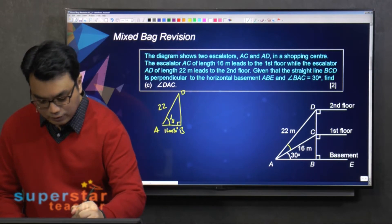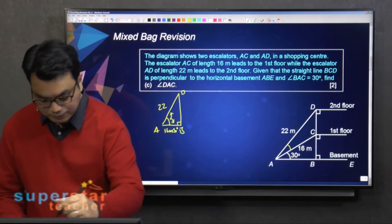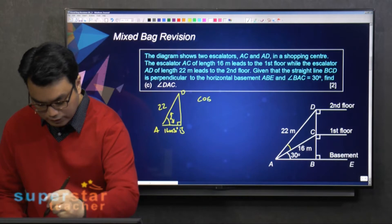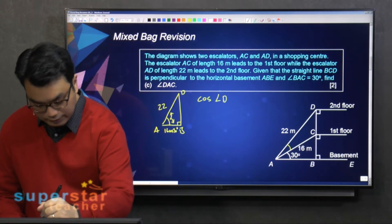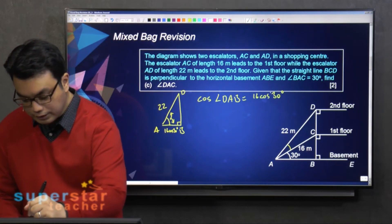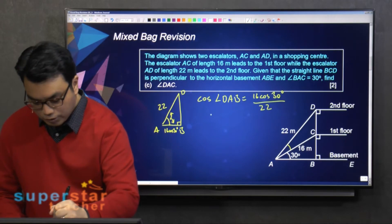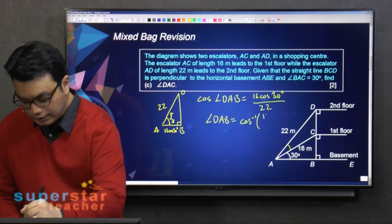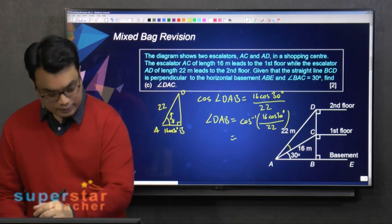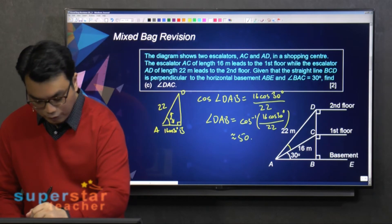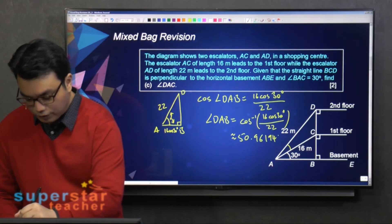So adjacent over hypotenuse. So from here, cosine angle DAB equals 16 cosine 30 degrees divided by 22. So angle DAB will be inverse cosine of this: 16 cosine 30 degrees over 22. So you calculate this out. It is approximately 50.96194 degrees.